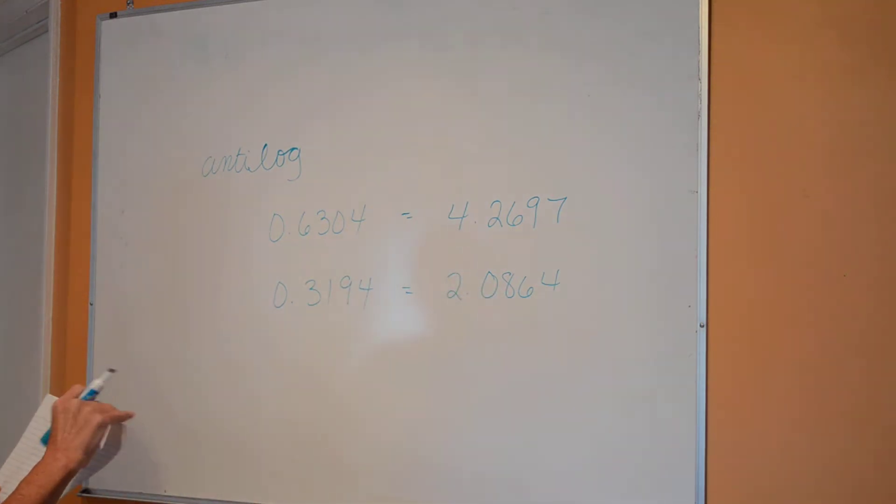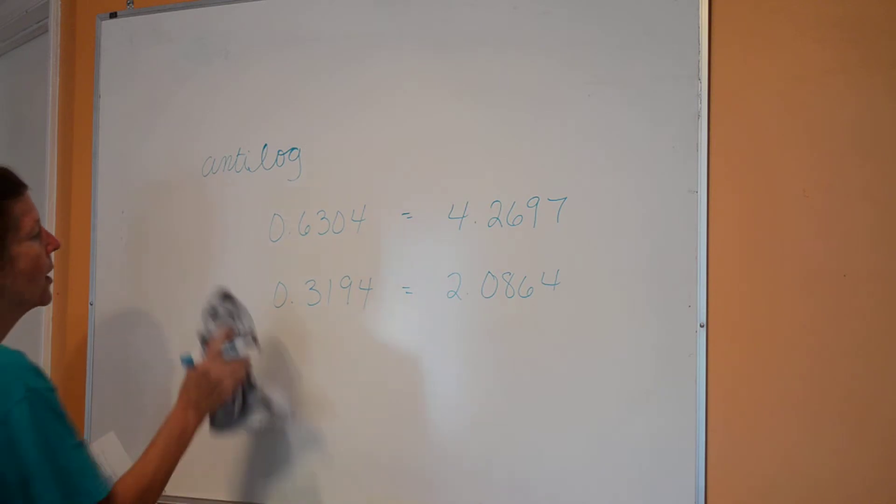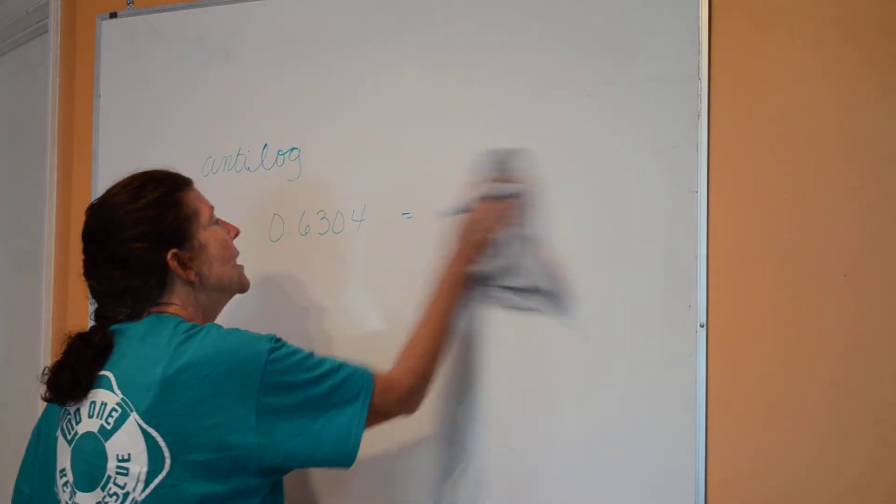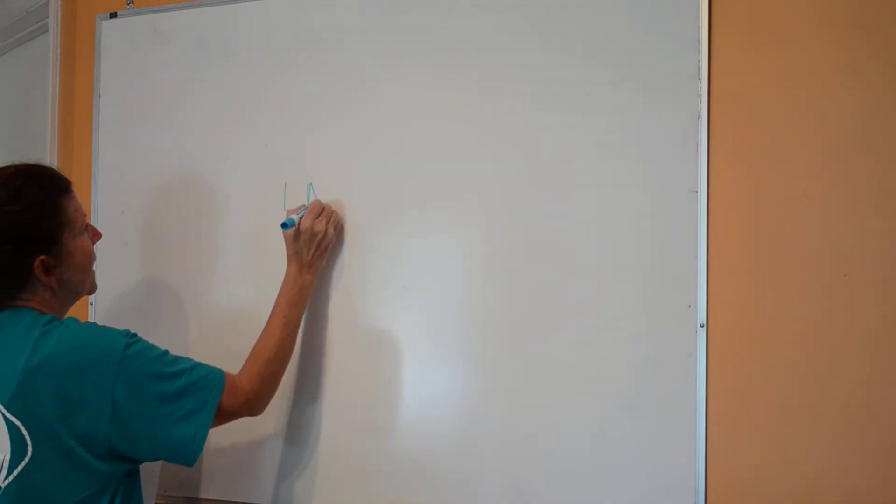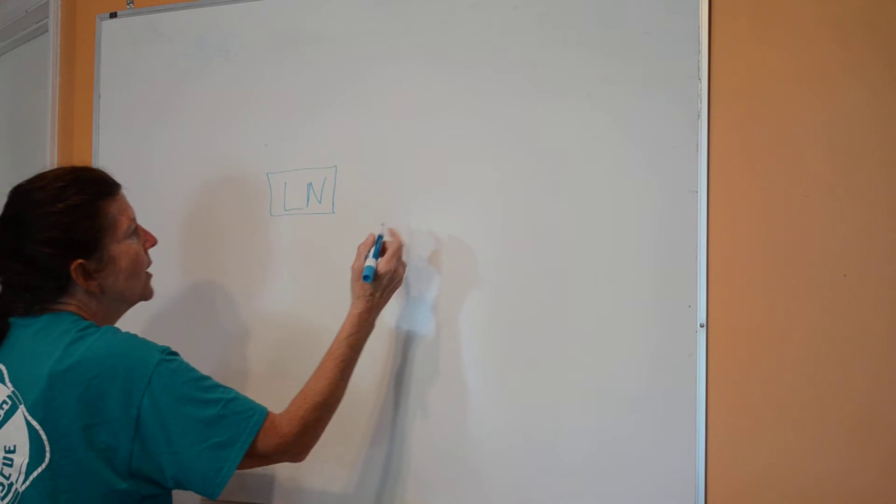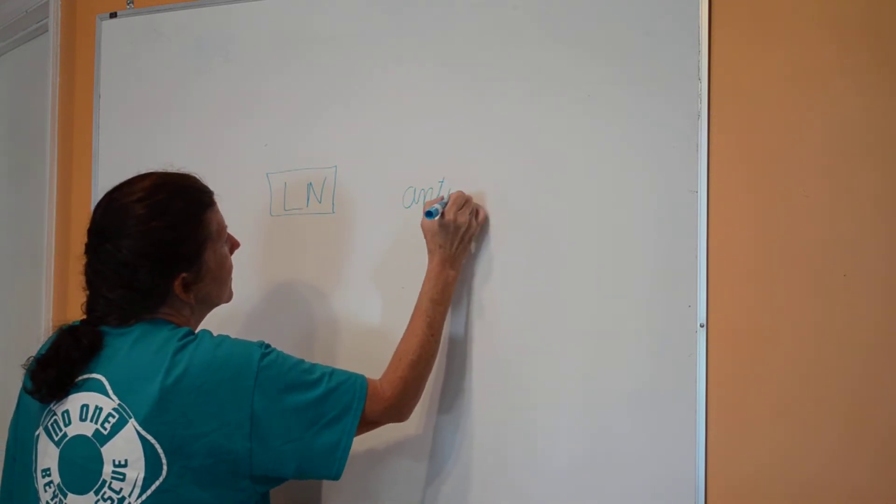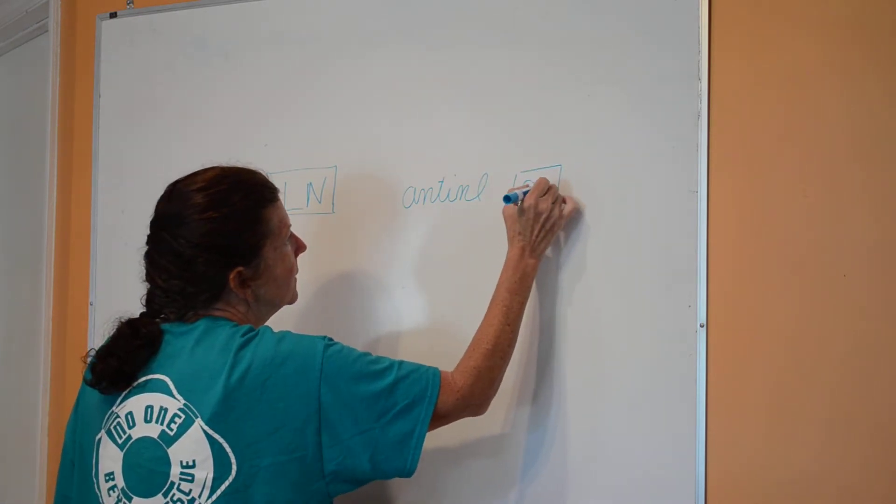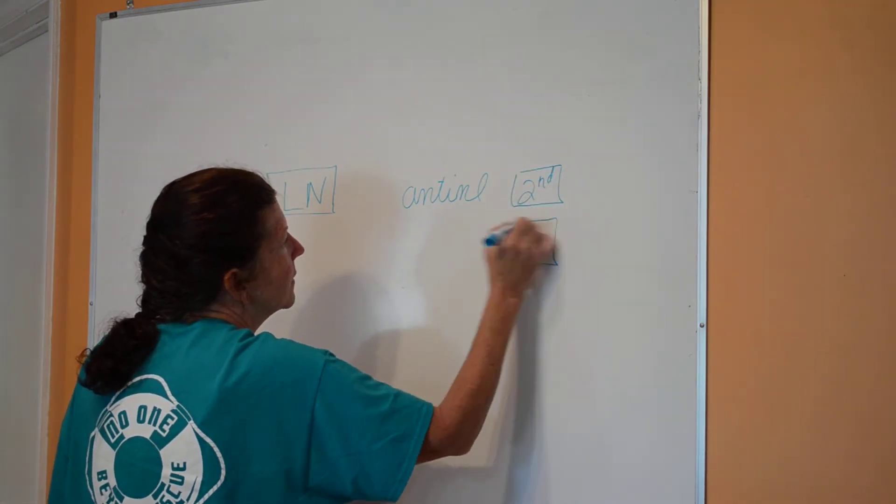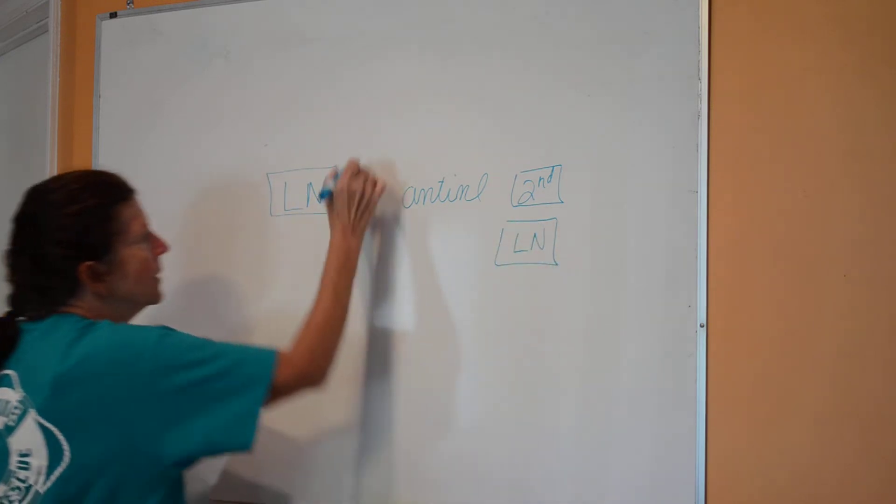We're going to do more calculator use today. Today we're going to be talking about something called a natural log. So this is a common log, totally based on a base of 10. The natural log, which on your calculator is the button LN, and you also have an anti-natural log, and that's going to be your second button and then your LN button.